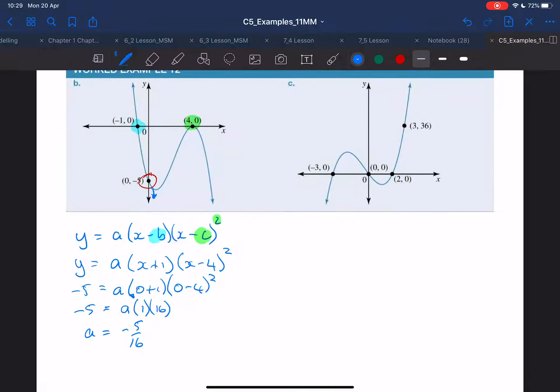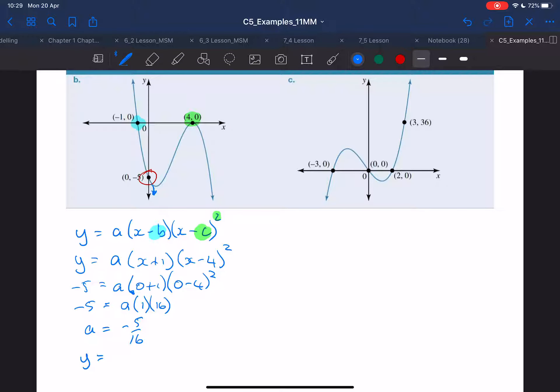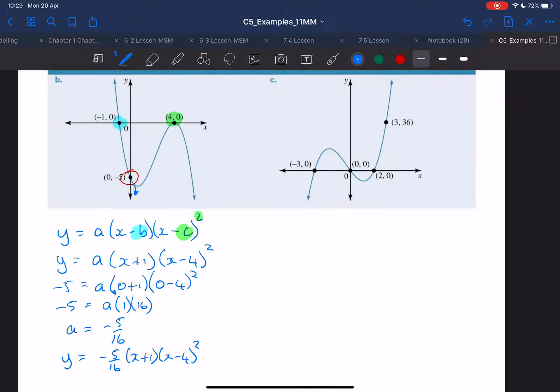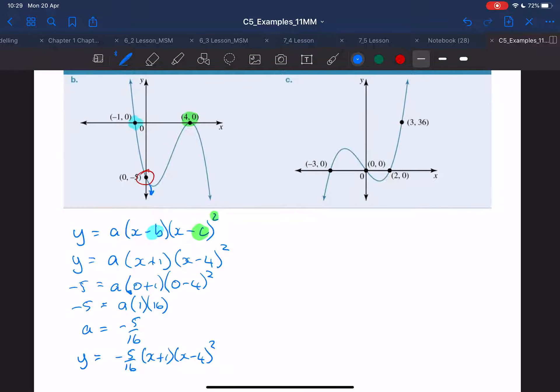So what's my equation? My equation, y equals minus 5 over 16, x plus 1, x minus 4 squared. Right, the same thing is going to happen over here.